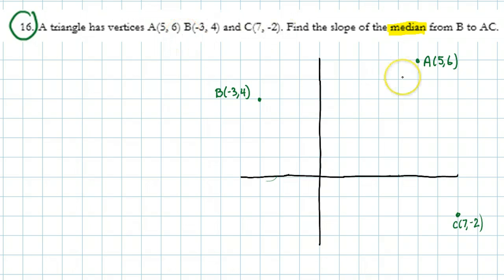So let's connect the triangle. So what is the median? If we want the median from B to AC, the median is the line that results when you connect the vertex to the midpoint of the opposite side.